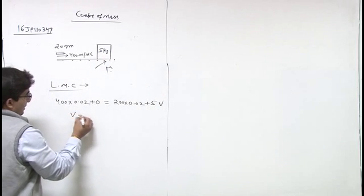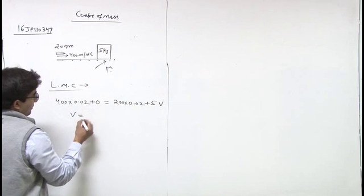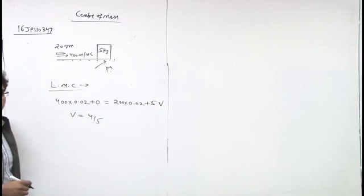So V comes out 4 into 2, 8 and 4, so 4 by 5, 4 by 5.